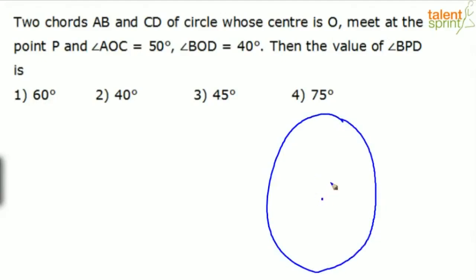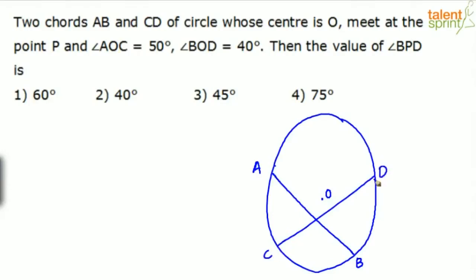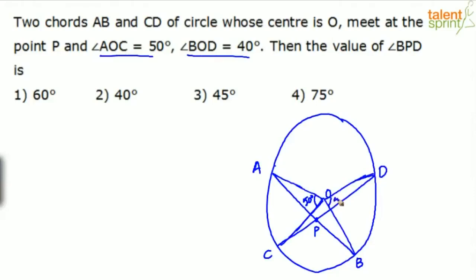The center of the circle is O. He says the two chords A and B intersect at point P, so let's draw the two chords: this is called AB and this is called CD. They intersect at the point P. Now, angle AOC is 50 degrees — connecting A to O to C — and angle BOD is 40 degrees, from this point to the center. So this angle is 40 degrees. Then we have to find angle BPD.